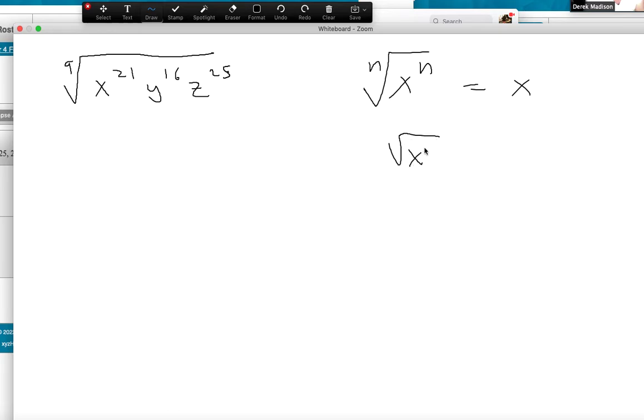So like if I have the square root of x squared, that's x. If I have the ninth root of x to the ninth, I'm taking the ninth root of something to the ninth, so that makes it, again, just an x.